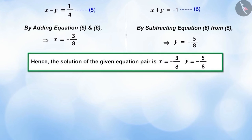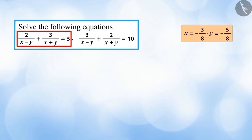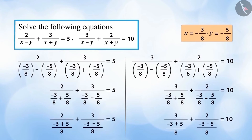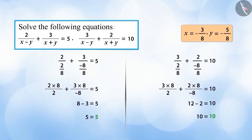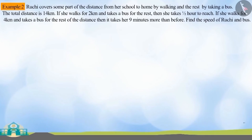Similarly, on subtracting equation six from equation five, we get y = −5/8. Therefore, the intended solution for the given pair of equations is x = −3/8 and y = −5/8. Putting the values back into equations one and two, we verify that x = −3/8 and y = −5/8 is the only solution to the given pair of equations. Let's look at some more examples.